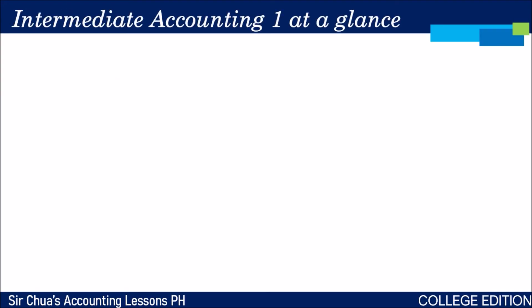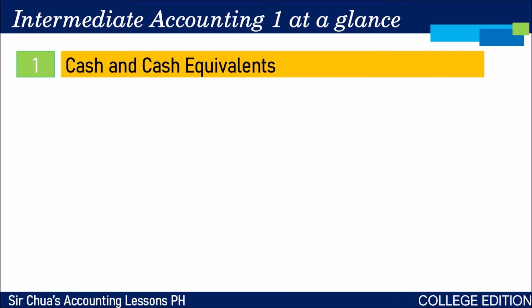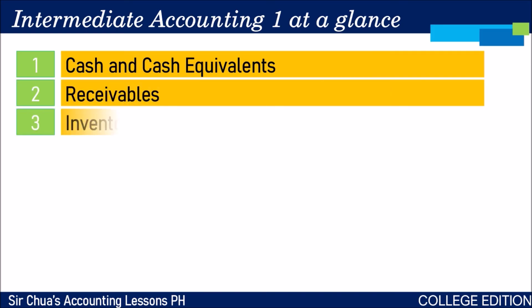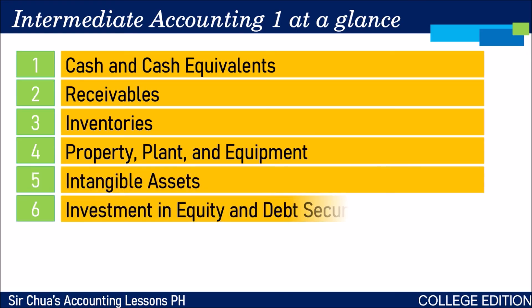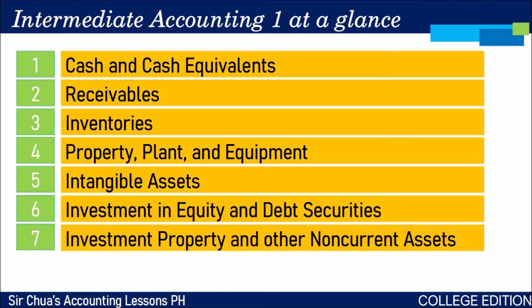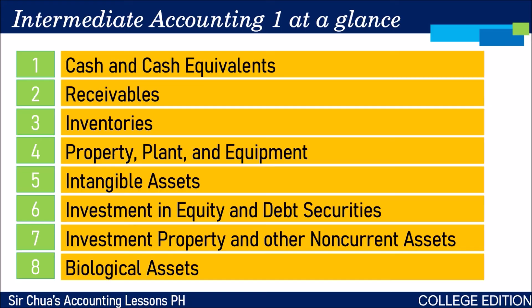At a glance, the following topics will be covered to complete Intermediate Accounting Part 1: cash and cash equivalents, receivables, inventories, property, plant and equipment, intangible assets, investment in equity and debt securities, investment property and other non-current assets, and biological assets. That's eight main topics, but each has many subsections.